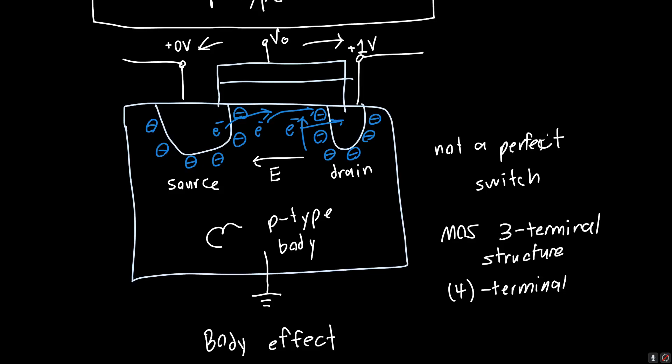Sometimes we will have to worry about what the body is connected to, and indeed in the next video we're going to discuss the body effect — what happens when this body voltage VB is not equal to zero, and what happens then with this full structure. But this is the conceptual foundation for what a three or four terminal MOSFET structure is, why we might want one, and what it's useful for.